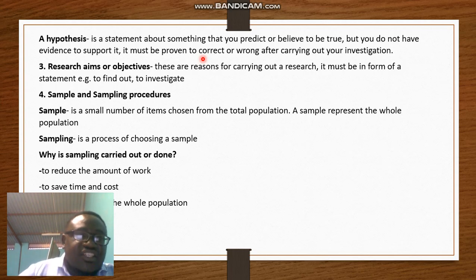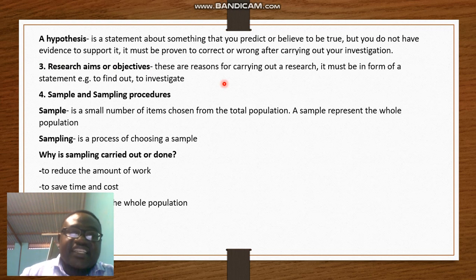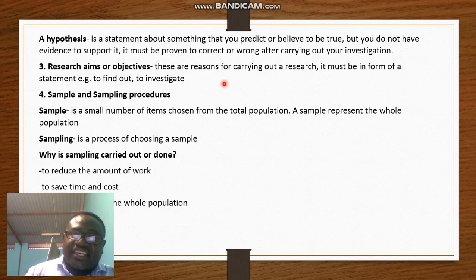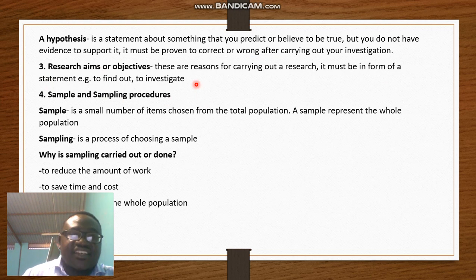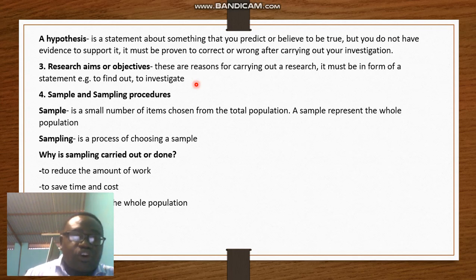Point number three is research aims or objectives. This is very important. As a researcher, you must have reasons why you are carrying out the research — you cannot carry out research without objectives. Your research aims or objectives must be in the form of a statement. For example: 'My aim is to find out the reasons why teenage pregnancy is so high in Rundu,' or 'to find out the solutions to teenage pregnancy in Rundu,' or 'to discover the negative effects of teenage pregnancy.'